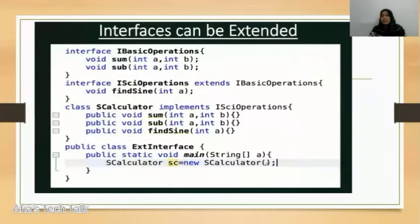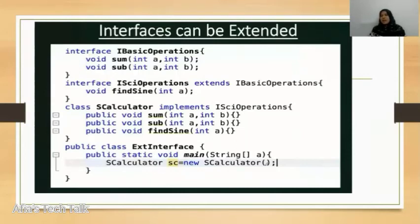Next, an interface can be extended. I am going to show you how. Interface IBasicOperations is declared with methods sum and sub. ISciOperations is declared in another interface, and it extends IBasicOperations. We will create the ISciOperations and the SCalculator class. These involve three methods.